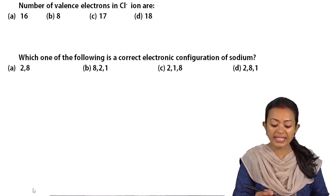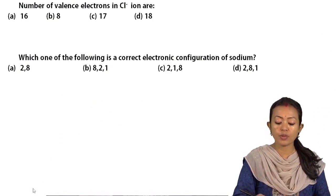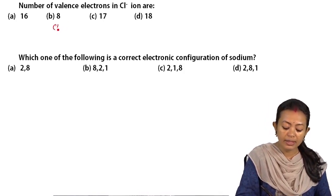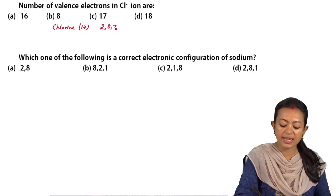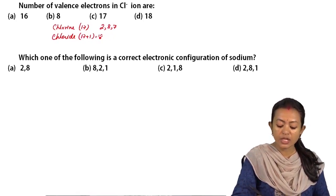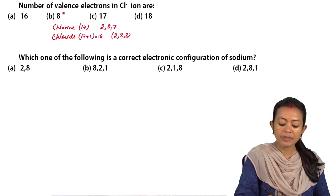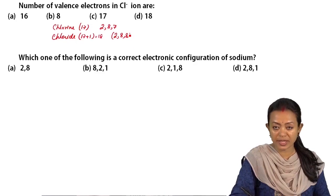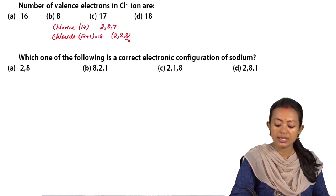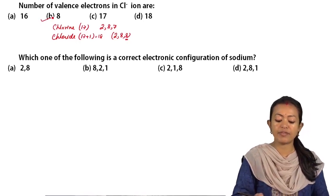The number of valence electrons in the chloride ion — options are 16, 8, 17, and 18. Chlorine's atomic number is 17, so its electronic configuration is 2, 8, and 7. But the moment it becomes the chloride ion, it gains 1 electron and thus has 18 electrons. So the chloride ion has the electronic configuration 2, 8, and 8. The valence electrons are those present in the outermost orbit, which is 8. So the answer is 8.